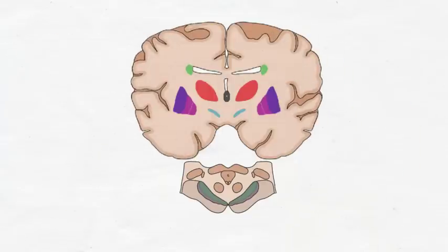Activity in the nuclei of the basal ganglia doesn't cause movement independently, but instead the basal ganglia influence activity in other areas of the brain, like the motor cortex, to affect movement. The ways in which the basal ganglia do this are not fully understood, but one hypothesis is that there are different circuits in the basal ganglia that promote and inhibit movement respectively.